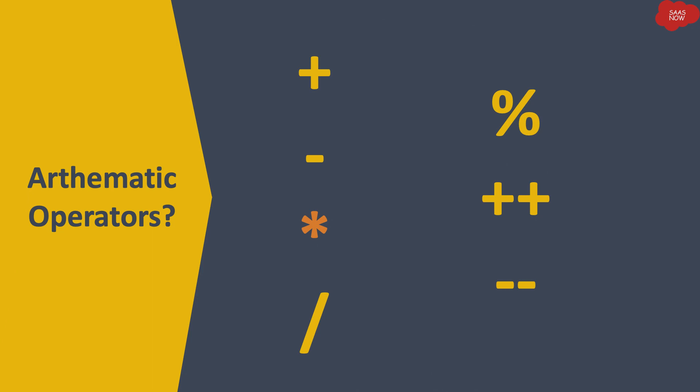Asterisk is used to multiply two numbers. Then we have slash — it is called divide, which is used to divide two numbers. Then we have percentage — which is called modulus, used to get the remainder of division of two numbers. So when you divide two numbers, whatever remainder you get is given by modulus. Then we have double plus — called increment — which adds one to any number. And double minus — called decrement — which subtracts one from any number.